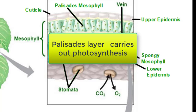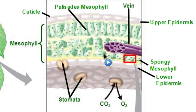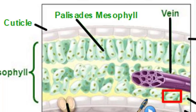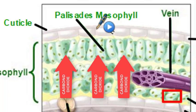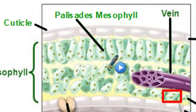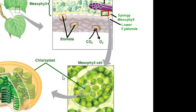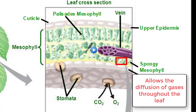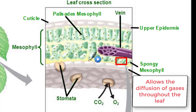Below the palisades layer is the spongy mesophyll. It's called spongy because it has air pockets inside it, which allows space for gases to move through. This passage of gases from the bottom of the leaf up to the palisades mesophyll is important because the palisades layer needs carbon dioxide for photosynthesis. The spongy cells do have some chloroplasts and carry out some photosynthesis, but the majority occurs in the palisades layer. Primarily, the spongy layer allows diffusion of gases: oxygen moves through the spongy layer and out through the stomata, while carbon dioxide moves in through the stomata, through the spongy layer, and up to the palisades layer.